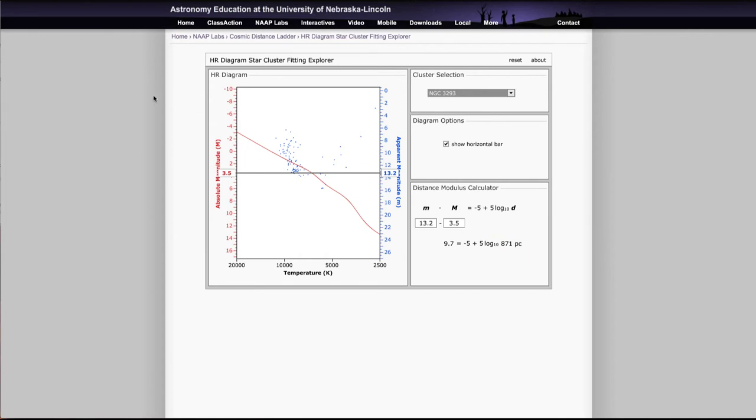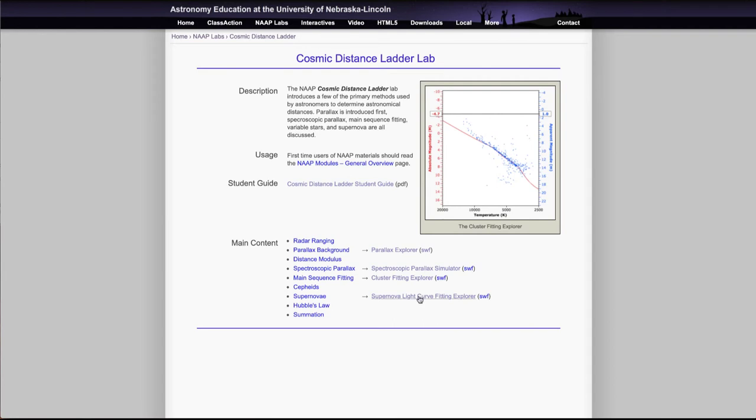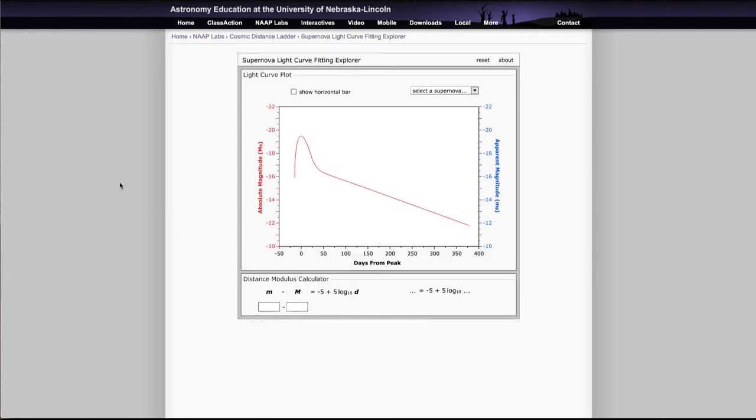And then we have one more simulator to look at briefly. And that would be the supernova light curve fitting simulator. This is important because this is for very distant objects. Parallax works for very close objects, supernovae can be seen across the universe.